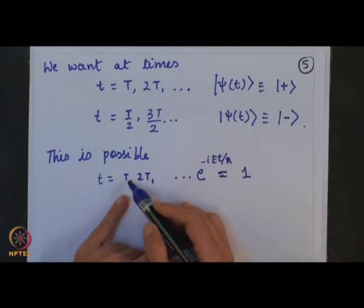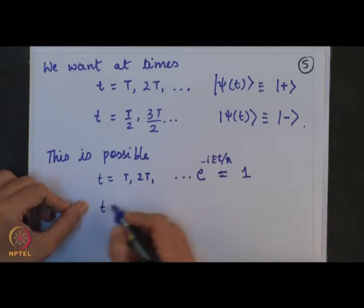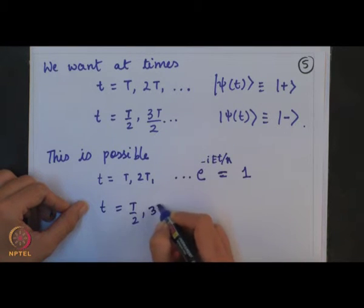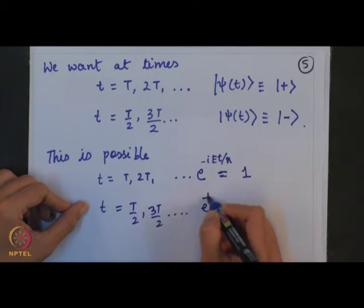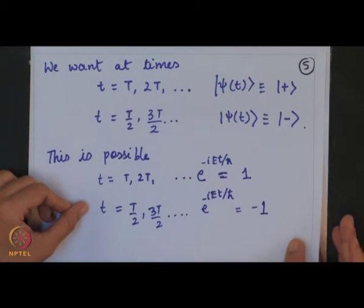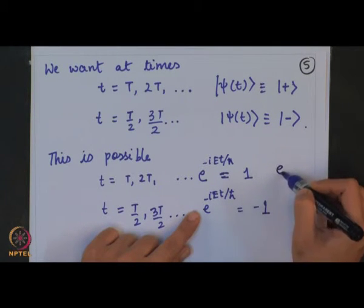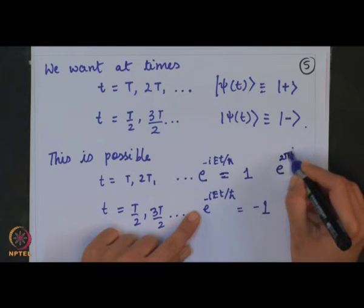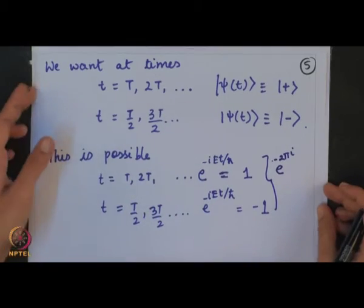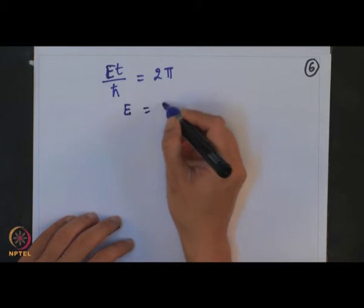This periodicity occurs when the exponent equals −1, and for times t/2, 3t/2, etc., this same exponent would give the value −1. At these two times this is possible only when the exponent is 2πi for both cases.